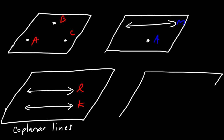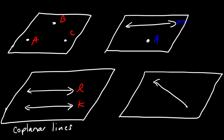Two lines that intersect also lie on one plane. Let's call this line R and line S. They intersect at this point, and so these two are coplanar lines — they share the same plane.